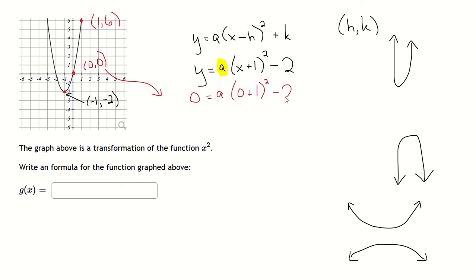And then I'm going to use this to solve for the a value. So I just have to do a little bit of arithmetic here. This will be 0 plus 1 which is 1. 1 squared is 1, and then 1 times a is just a. Subtract 2... add 2 to both sides, and now I get that a is equal to 2.